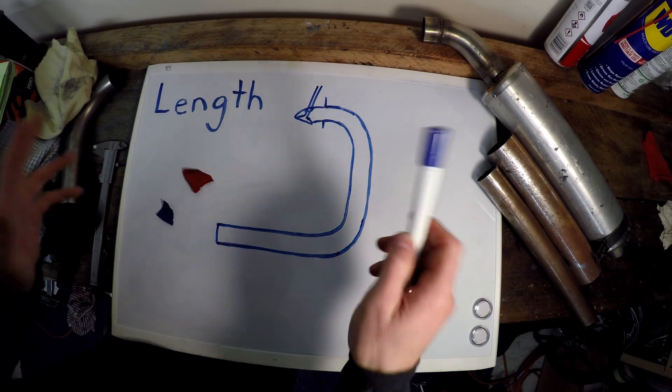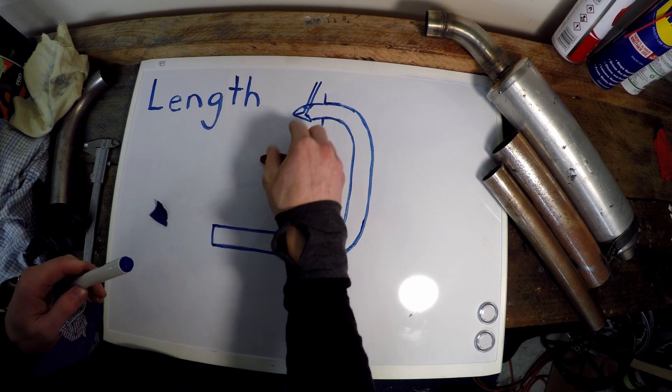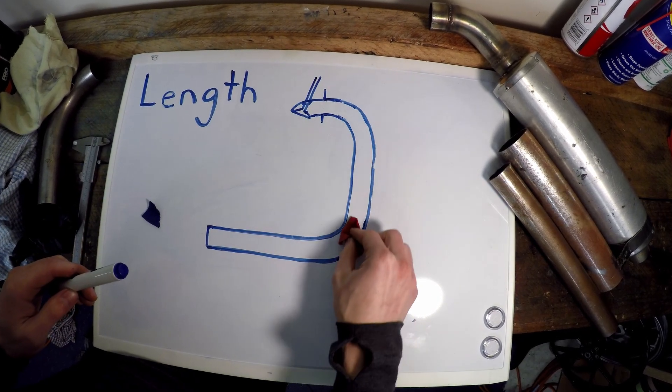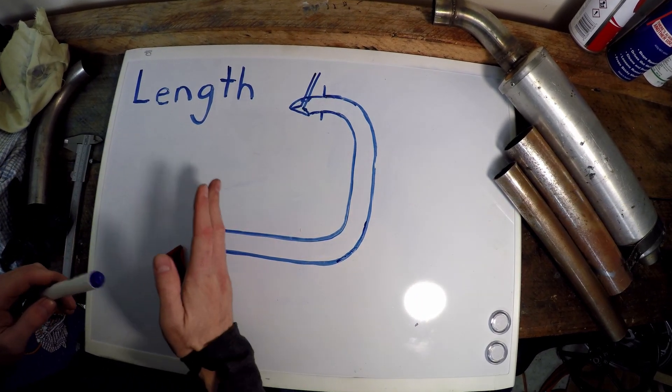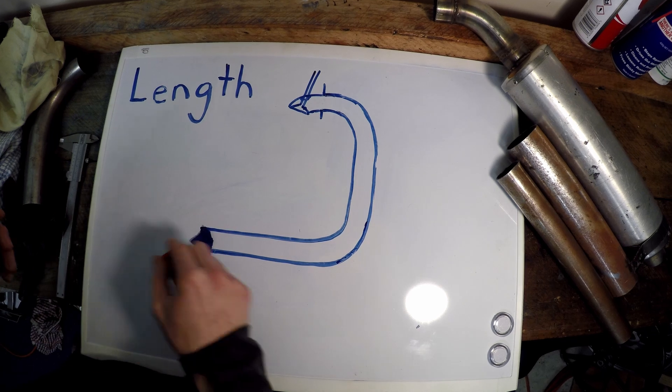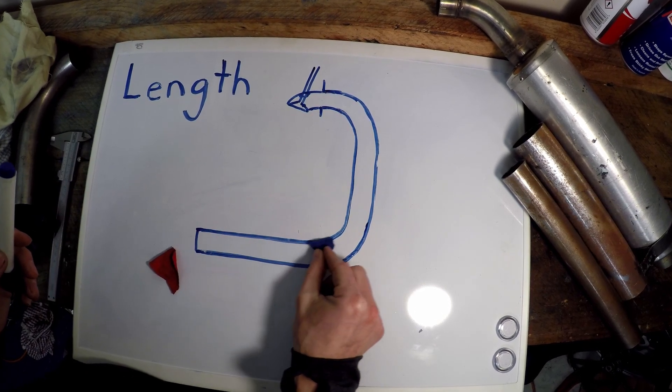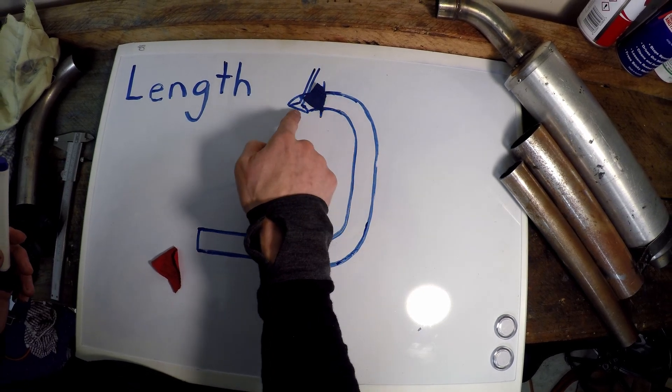The reasoning behind this is exhaust gas pressure waves. They are caused by the combustion in the cylinder. When the valve opens, this pressure wave, positive pressure, flies down the exhaust to the end. When it gets to the end, the exhaust gases go out and a negative pressure wave goes up the exhaust to our exhaust valve.